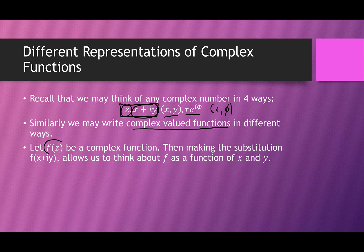If F of Z is some complex function, then if we make the substitution Z equals X plus iY, our function is going to become a function of two variables — a function of X and Y. This brings it back to a Calc 3 scenario. Although you will have i's in it, you still will be in a Calc 3 two-variable function setting.